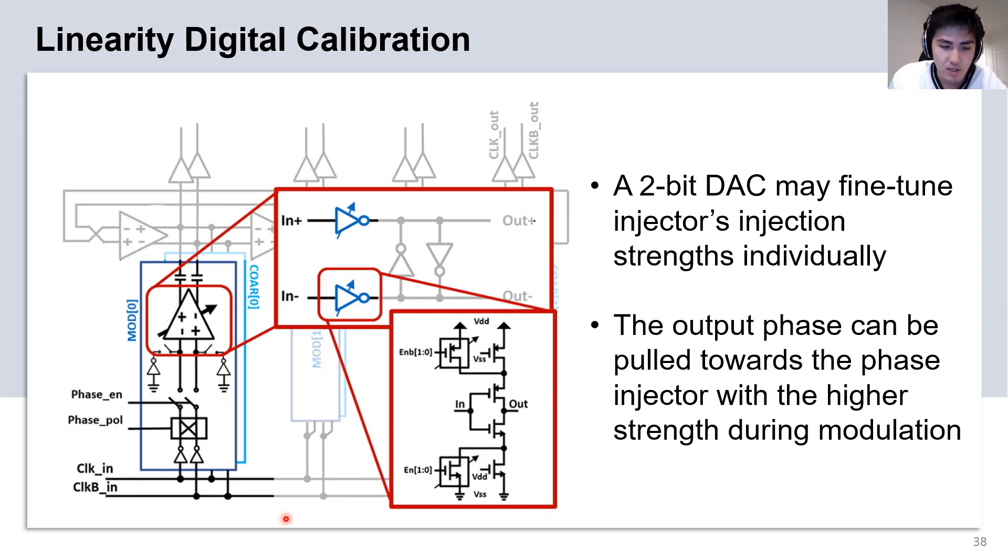When two adjacent injectors are modulating with different injection strength, the influence of the injector with the greater injection strength will be higher. Thus, the output phase will be pulled closer to the phase of that injector. After calibration, each specific phase code is programmed with its own set of DAC settings across the eight injectors and dynamically changed as the phase rotates.